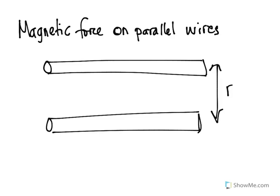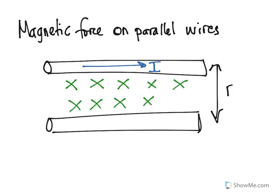Let's suppose that the current goes in this direction. If we use the right-hand rule, at the lower part the magnetic field will go towards the inside. So the second wire will receive a magnetic field towards the inside.